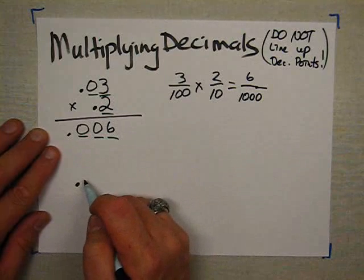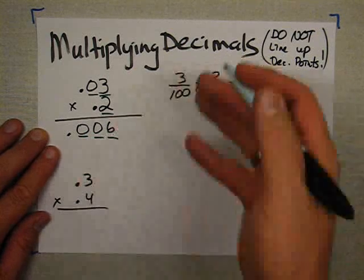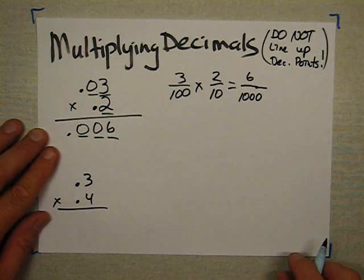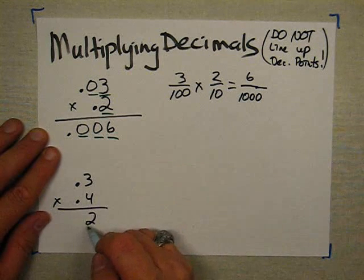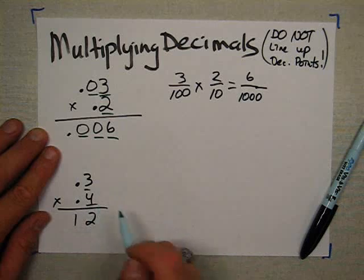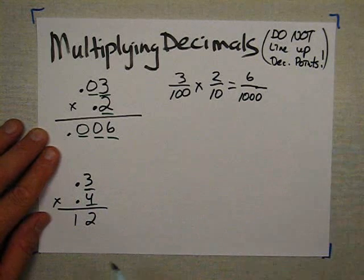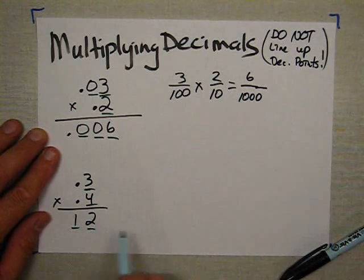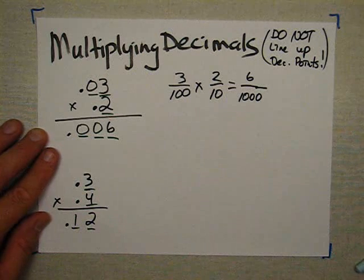Next example — a little easier. Point three times point four. Notice that it was just a coincidence that the decimal points lined up in this problem, but they're still not going to line up with the decimal point in the answer. Four times three is twelve. Now in the problem there are two digits on the right side of the point, so in the answer I have to have a total of one, two digits on the right side of the point.